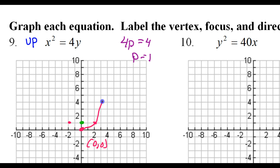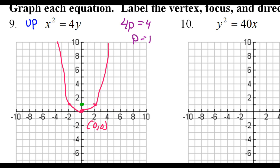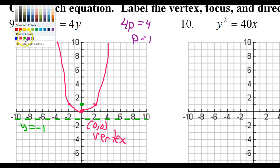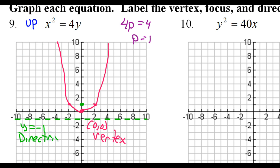Here is a basic sketch of the parabola. The directrix should be the same distance in the opposite direction. The directrix is the horizontal line y equals negative 1. We already have the vertex, and the focus is at 0 comma 1. So we have the focus, vertex, and directrix.